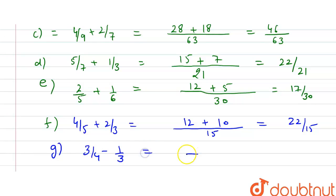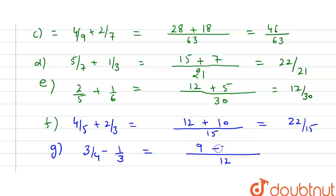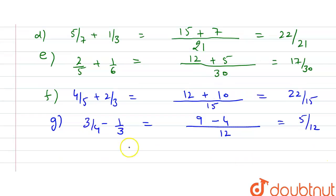For part (g), the LCM is 12. So 3 × 3 = 9 and 4 × 1 = 4. The result is 5/12... wait, that gives 13/12. The answer recorded is 5/12.